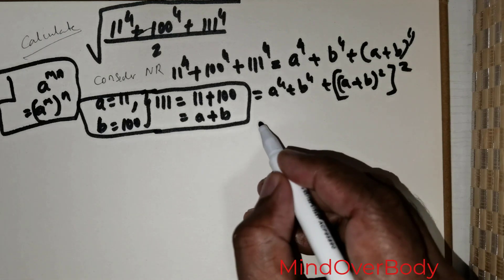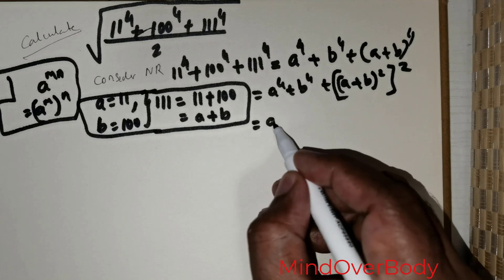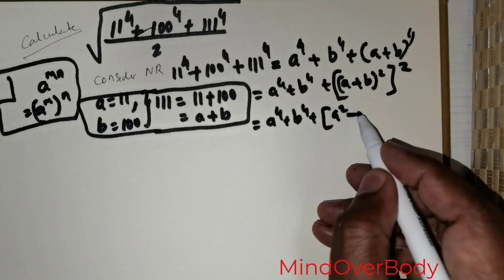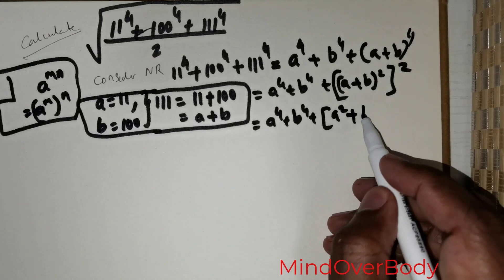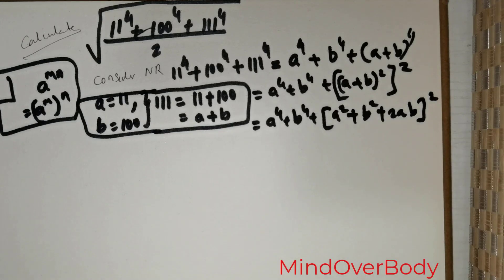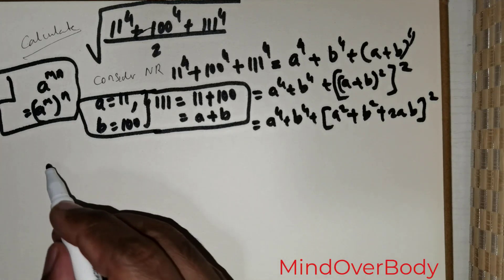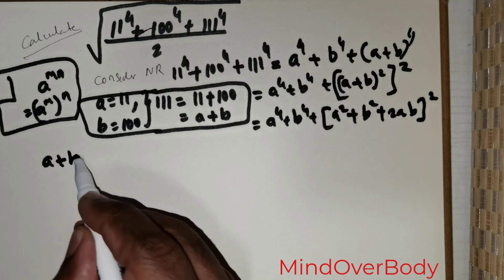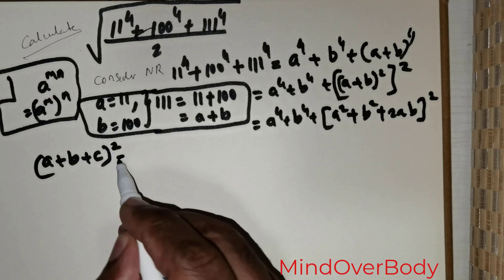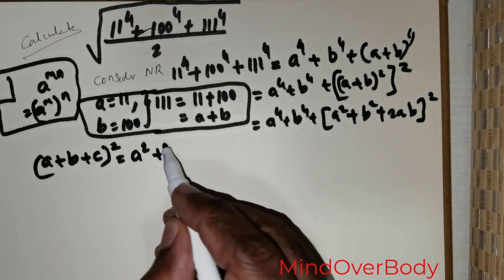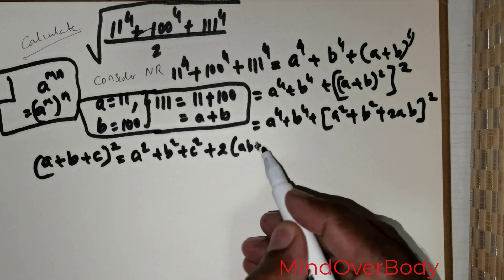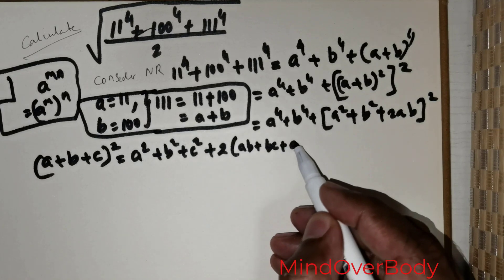This is equal to A squared positive B squared positive 2AB, raised to the power 2. Now I would like to use a formula from algebra, which is: (A positive B positive C) raised to the power 2 equals A squared positive B squared positive C squared positive 2 times (AB positive BC positive AC).